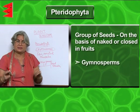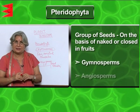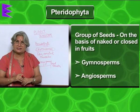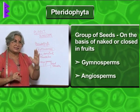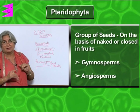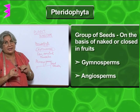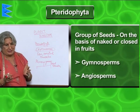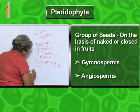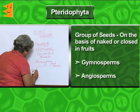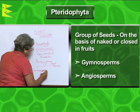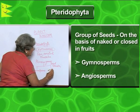In both gymnosperms as well as angiosperms, seed formation is present, so they have been separated from the cryptogamae. Whether seeds are naked or not is the next criteria — so phanerogamae can be gymnosperms or angiosperms.